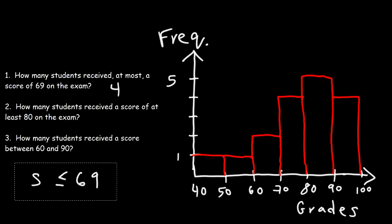Now what about number two? How many students received a score of at least 80 on the exam? What would you say? So what does that mean, at least 80? Is that less than 80 or more than 80? In this case, 80 is the minimum. In the last example, 69 was the maximum. So it has to be 80 or more. S has to be equal to or greater than 80.